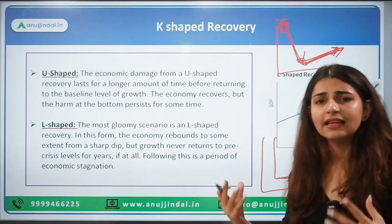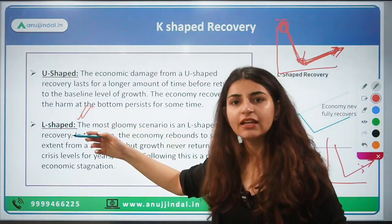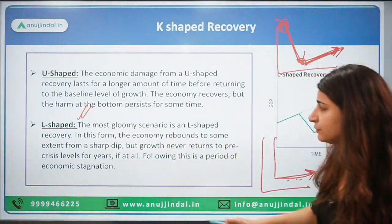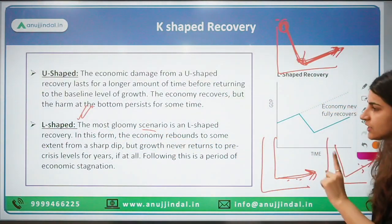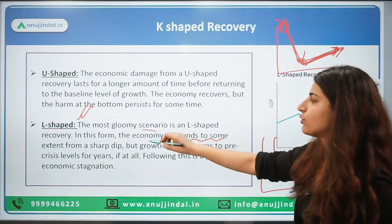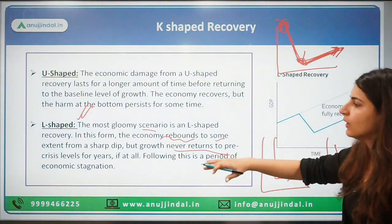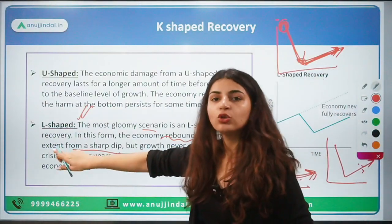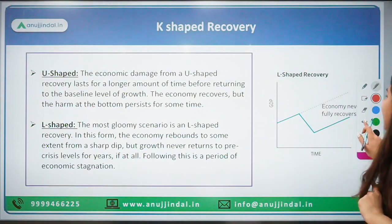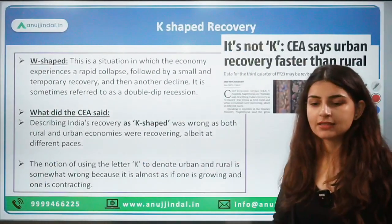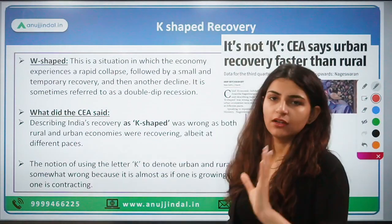Many economies, even if they were growing at a high pace, once they fell due to any external shock, were never able to recover to the phase they once were — that is L-shaped recovery. It is the most gloomy scenario. In this form, the economy rebounds to some extent from a sharp dip, but the growth never returns to the pre-crisis level, potentially leading to economic stagnation.